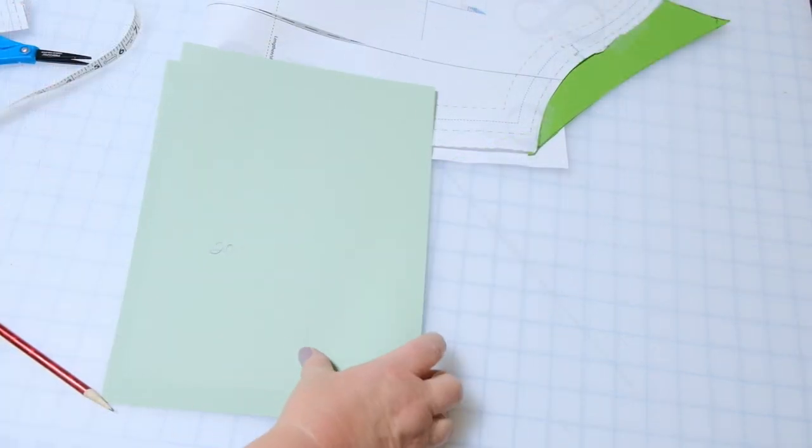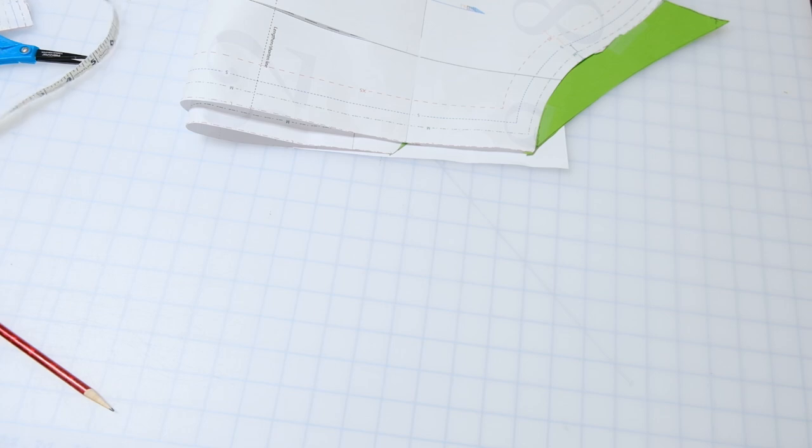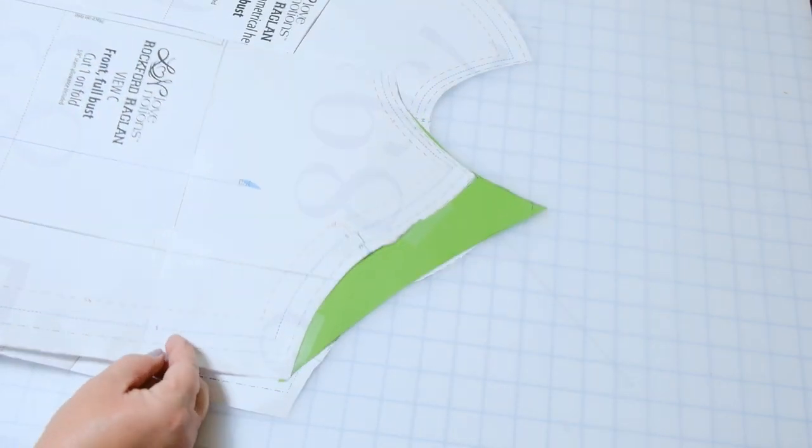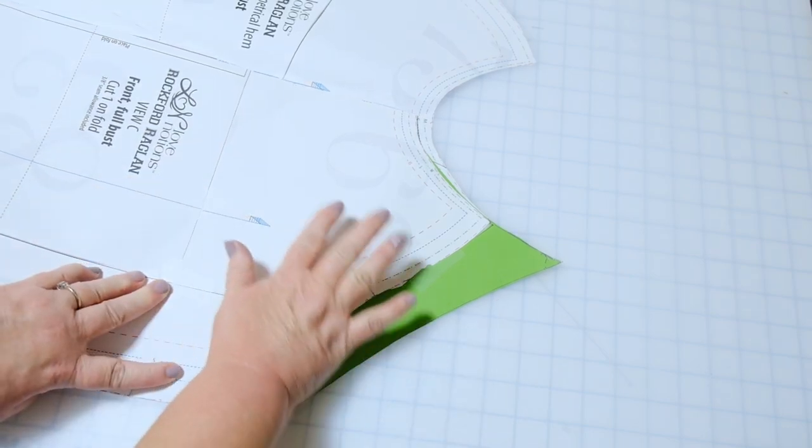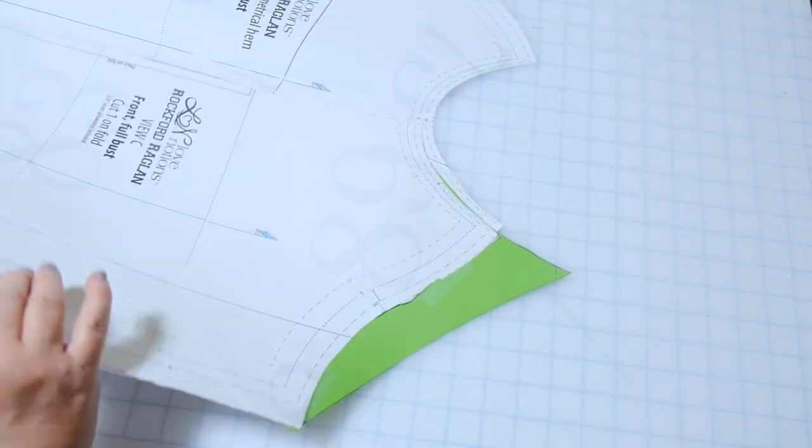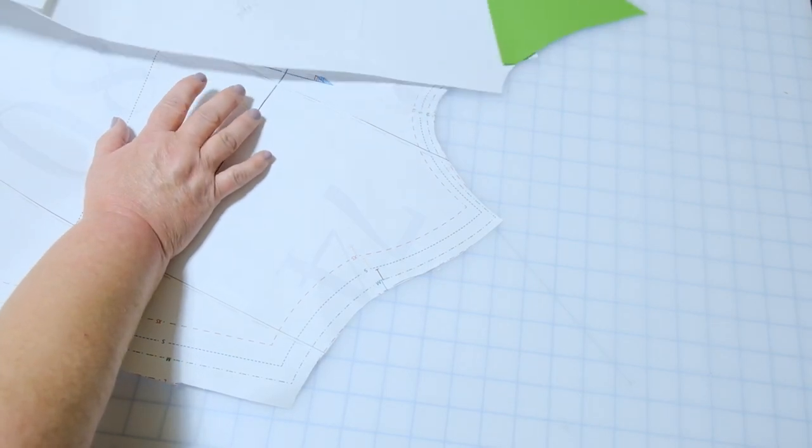So now that you have your front and your back piece, what you're going to do is take the overlay piece and your front piece and you're just going to copy this new neckline over to that piece by putting it on this side and then flipping it over and tracing it onto that side. Super simple.